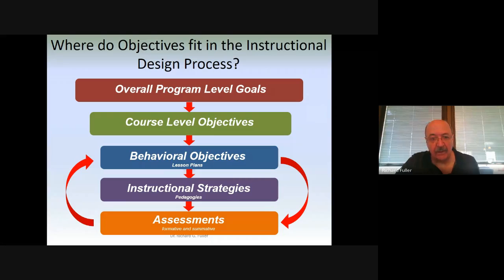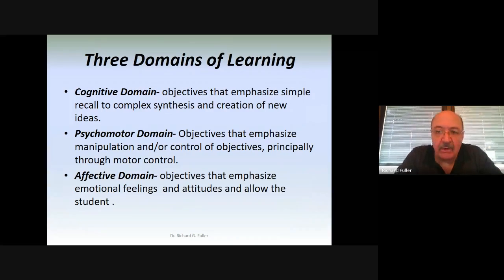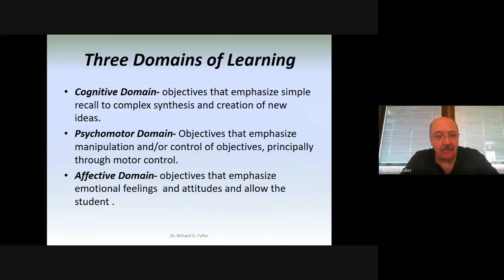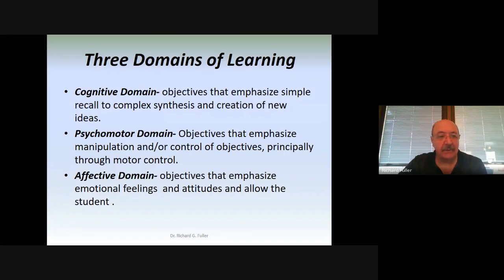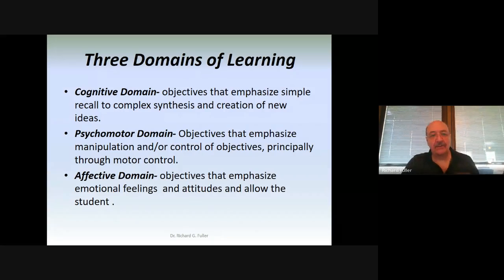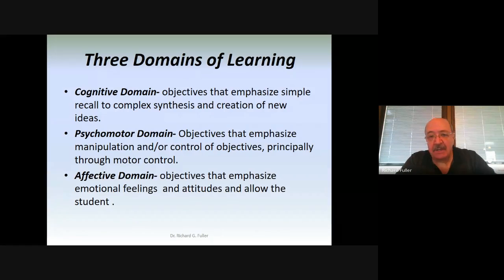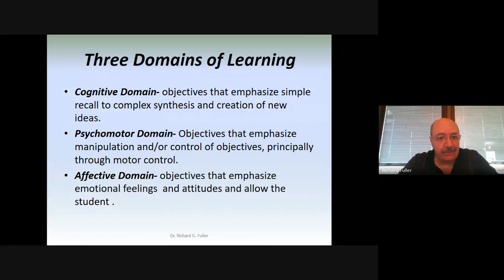When we write behavioral objectives, we have to think of them within the three domains of learning — Bloom's Taxonomy. Bloom first started writing this back in 1956 with the cognitive domain. The cognitive domain works with the idea that objectives emphasize simple recall up to very complex, synthesized ideas. It is essentially the formation of knowledge — concepts and knowledge.